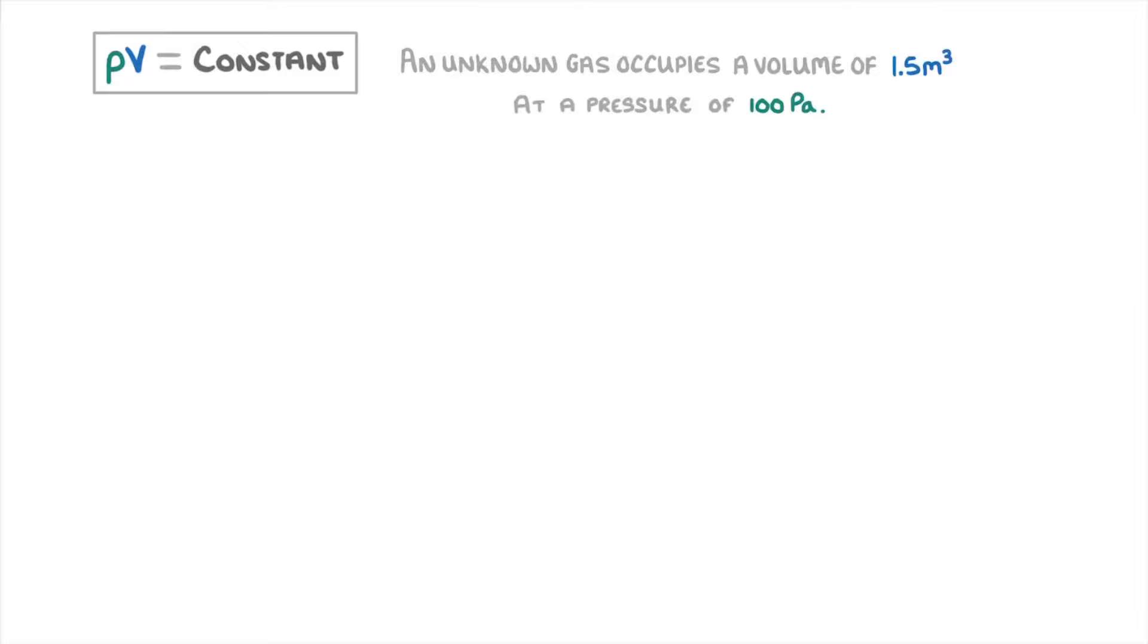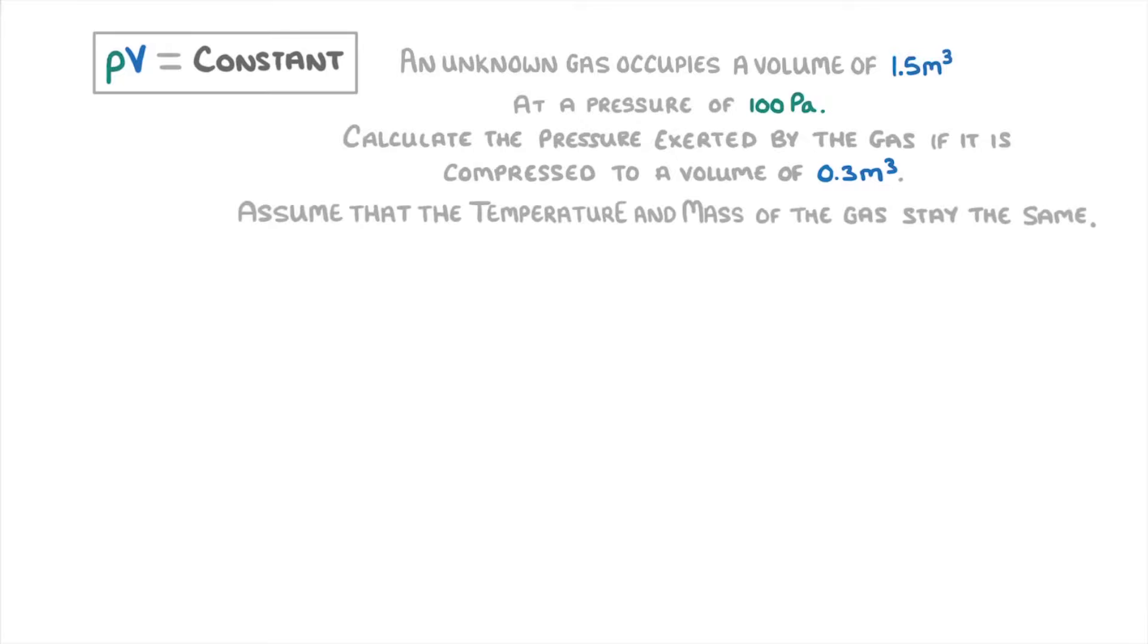An unknown gas occupies a volume of 1.5 meters cubed at a pressure of 100 Pa. Calculate the pressure exerted by the gas if it's compressed to a volume of 0.3 meters cubed. Assume that the temperature and mass of the gas stay the same.